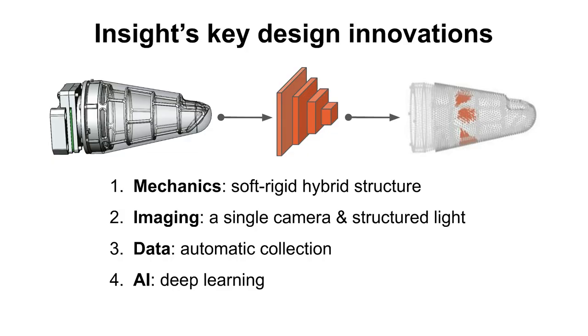The excellent sensing performance achieved by InSight is enabled by four key innovations: the mechanical design of its shell, the tailored imaging system InSight, automatic data collection, and cutting-edge deep learning are used behind the scenes to create a cheap, robust, and high fidelity device.